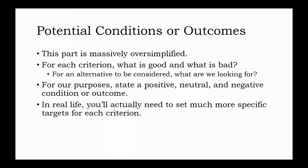To explain this, I'm going to oversimplify it. For each of the criteria that you've identified, you need to tell your audience what's good and what's bad before doing the analysis. That means for you to recommend a policy, what is the target or desired condition for each criterion. For our purposes, I'm only going to ask you to identify a positive, neutral, and negative condition for each. Just like there are rubrics on assignments that tell you what you have to do to achieve an unsatisfactory, satisfactory, proficient, and advanced score in each grading criterion, you need to define what a policy has to do to achieve a negative, neutral, or positive outcome for each evaluative criterion. In real life, you'll really set much more specific targets and levels of performance.